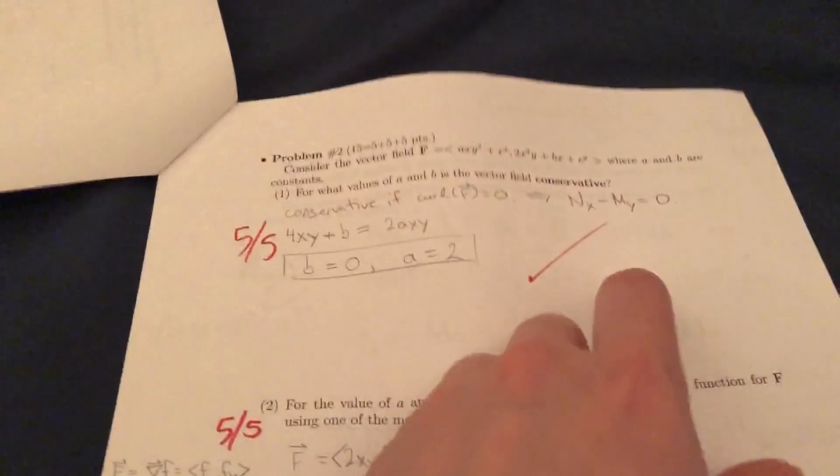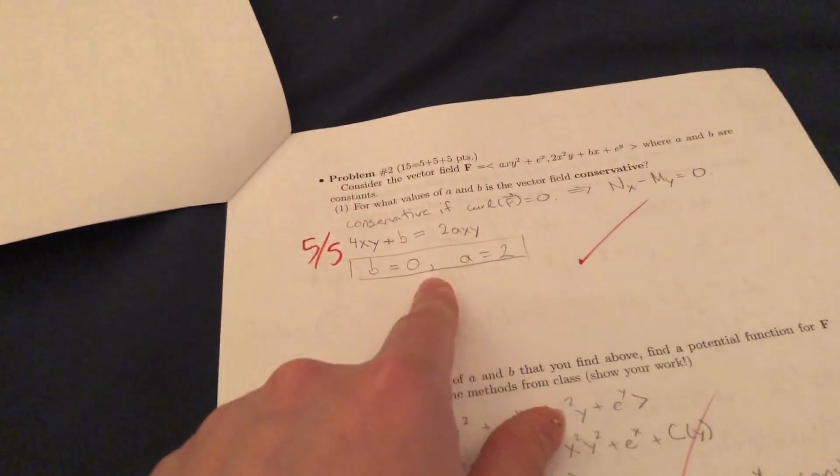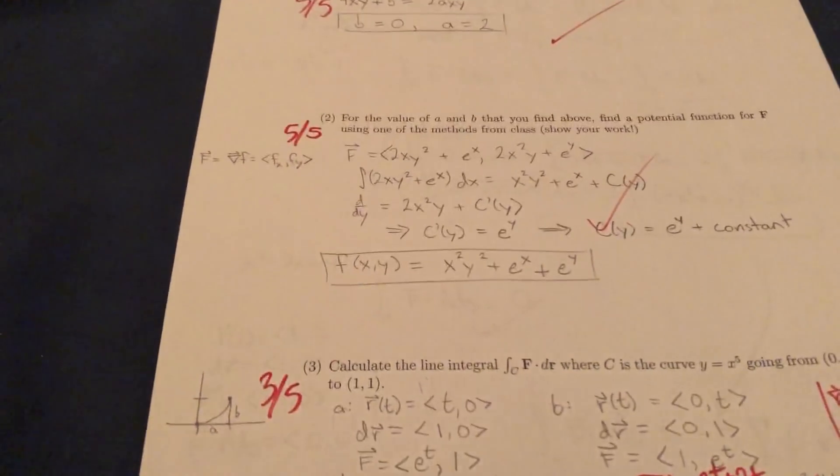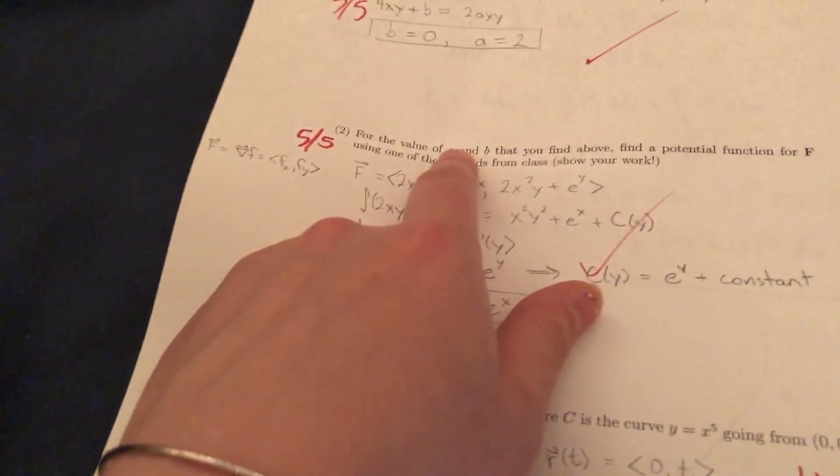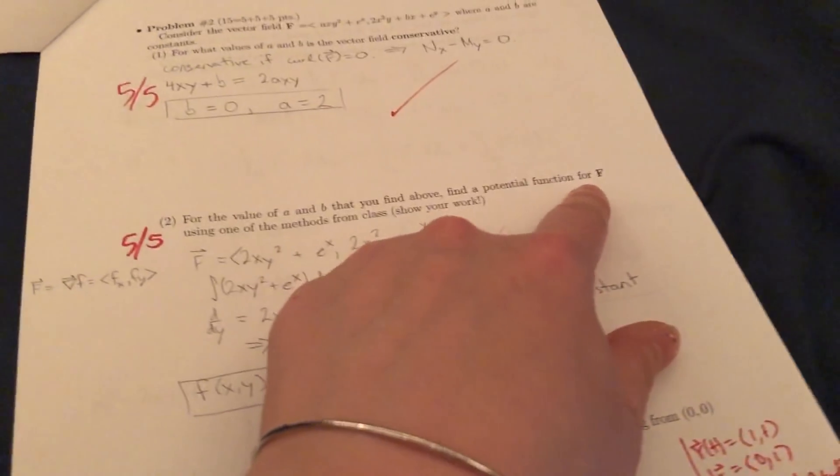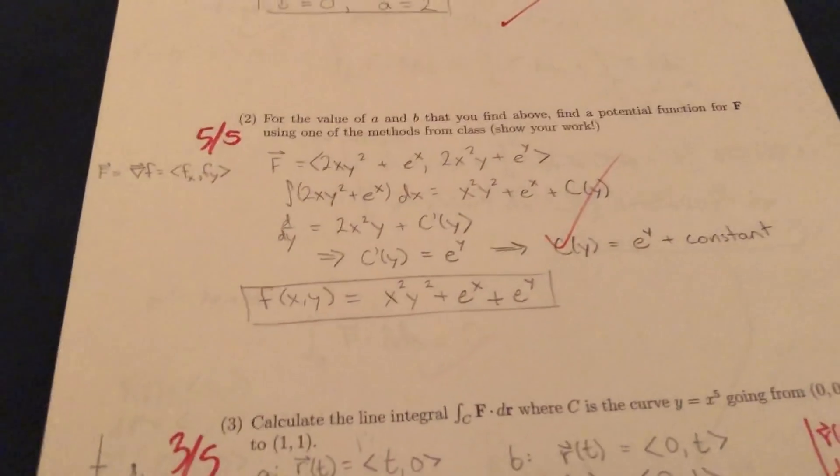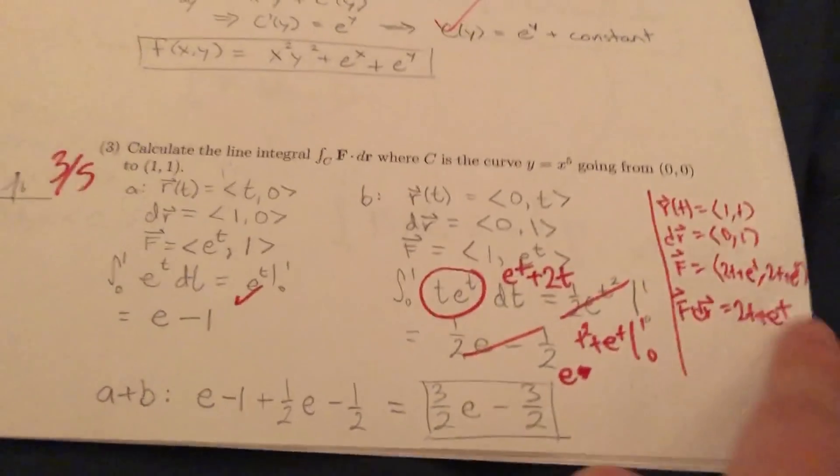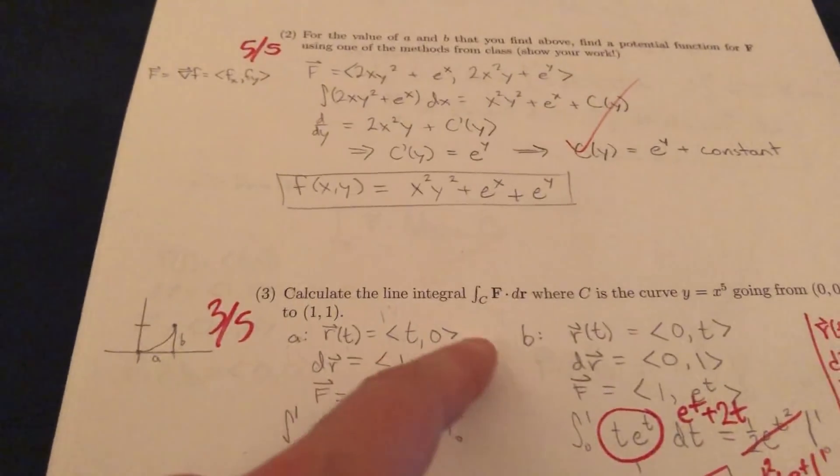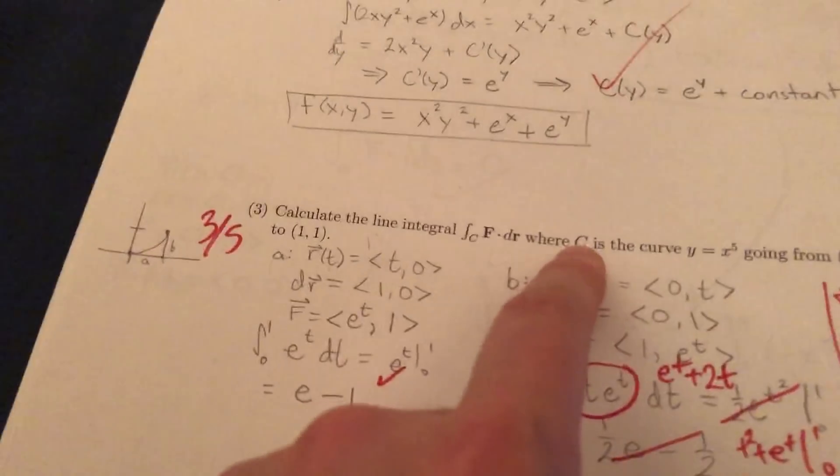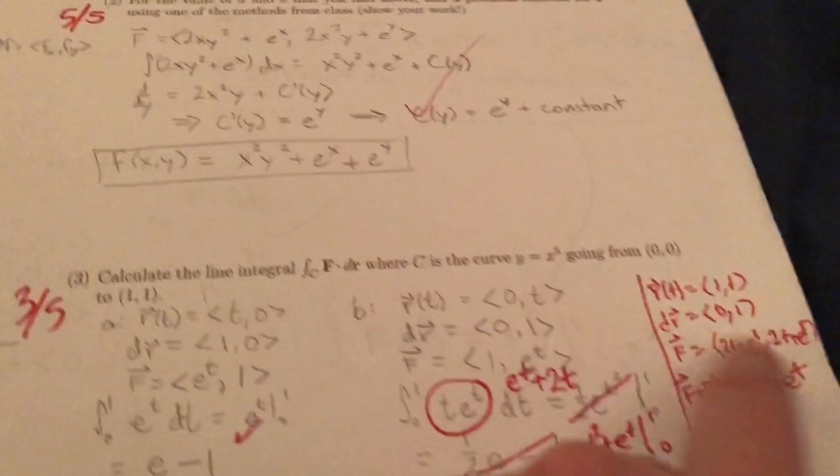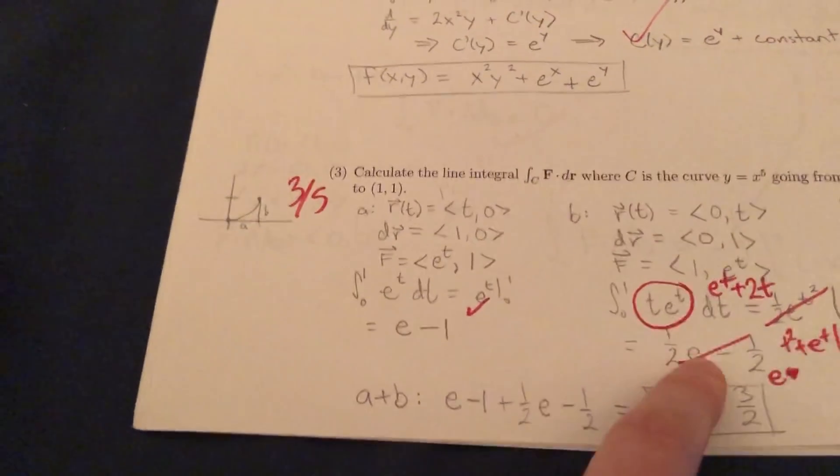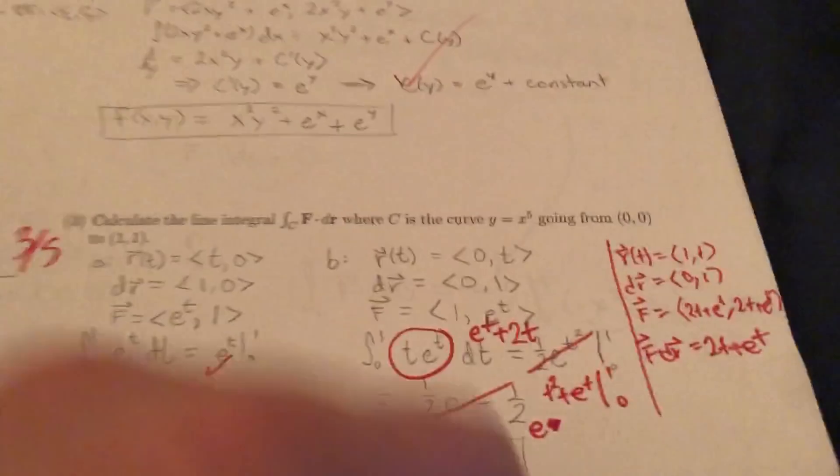Next, we have another vector field problem for which values may be the vector field conservative. So it's just learning what conservative is, more vector fields. Again, for what values of a and b do that you found above, find a potential function for f using one of the methods from class. So actually says to show your work, though I do that anyway. Partial credit, yay! And then here looks like I messed up. They put what I'm supposed to have. Calculate the line integral where c is the curve from y equals x to the fifth going from 0,0 to 1,1. Looks like I messed up here and just put it in wrong, which is sad. That's very sad.